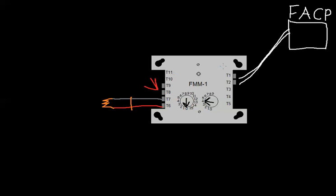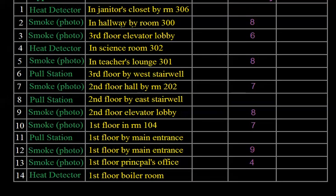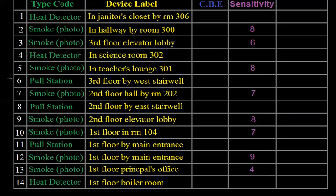This module then tells the panel, 'Device four is activated.' Whatever it was programmed as — say a water flow — the panel would use that information. Imagine device four on the spreadsheet was programmed as a water flow for room 302. The panel is going to say: alarm, water flow, room 302, et cetera.